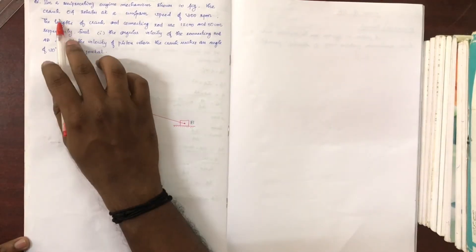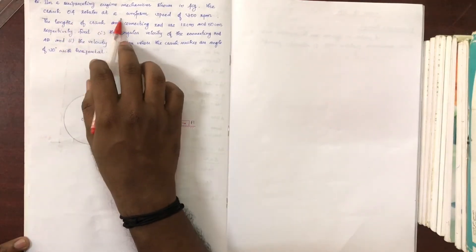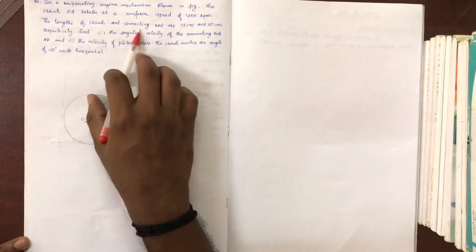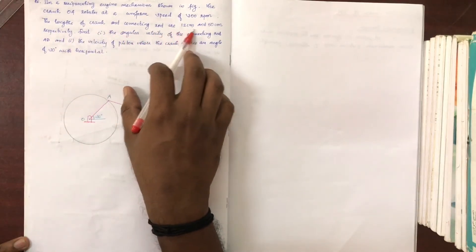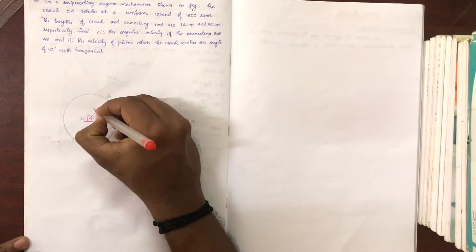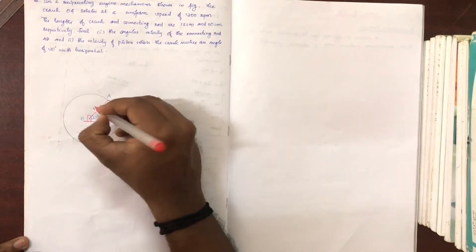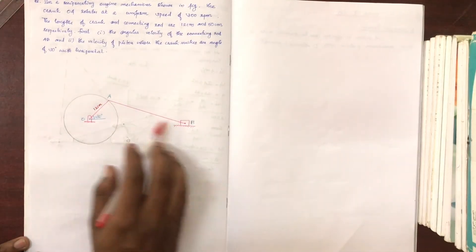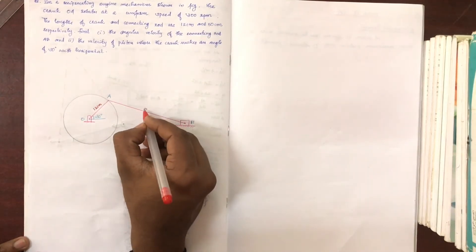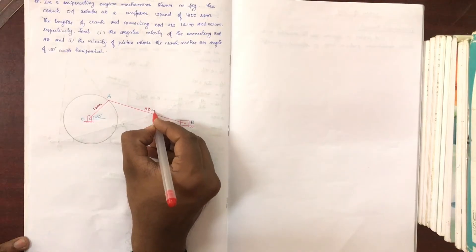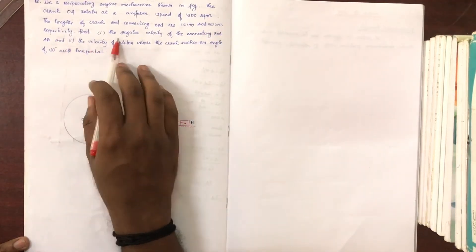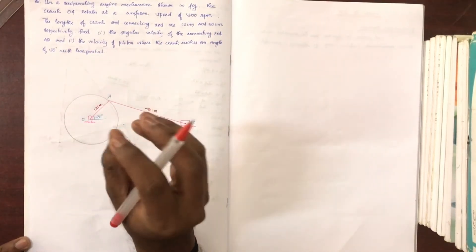The crank is rotating at 300 RPM. The length of the crank is 12 cm and the connecting rod is 15 cm. Find the angular velocity of the connecting rod.